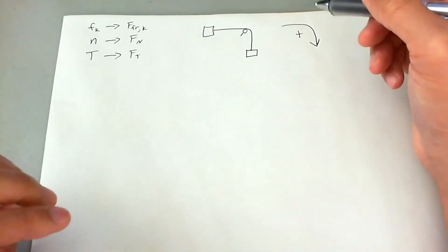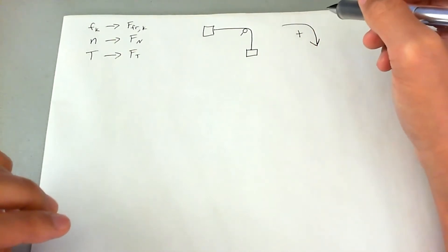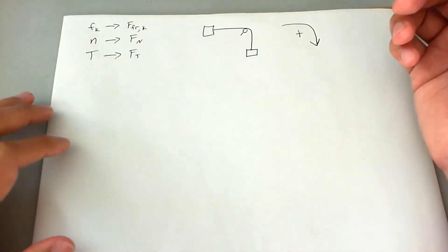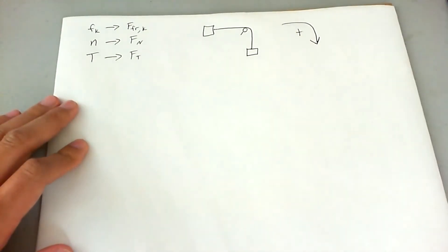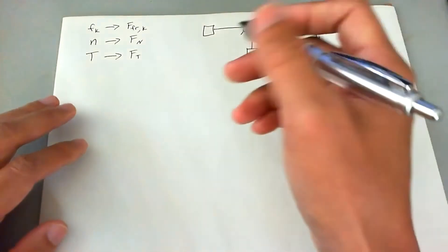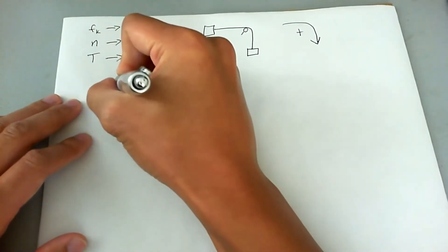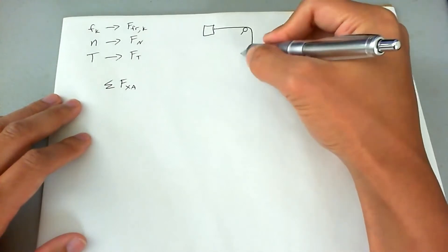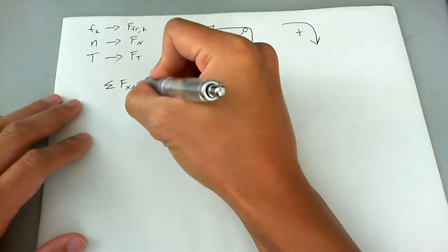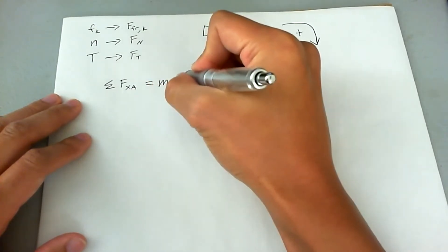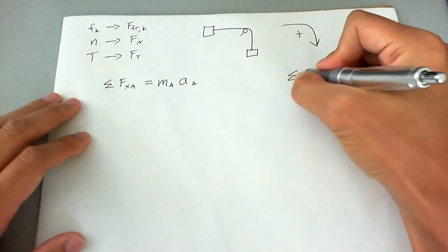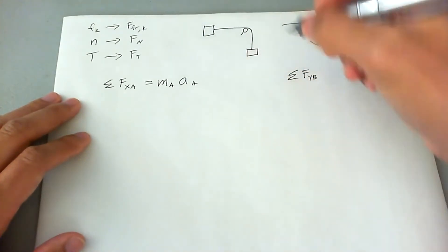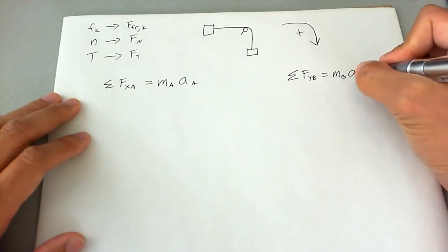Let's go ahead and answer the question: find the acceleration of the blocks in terms of MA and MB. We'll do that by writing out Newton's second law. The sum of all forces in the X direction applies only to block A, since block B doesn't move side to side, and that equals mass of block A times the acceleration of block A. The sum of forces in the Y direction applies only to block B, equaling mass of block B times the acceleration of block B.